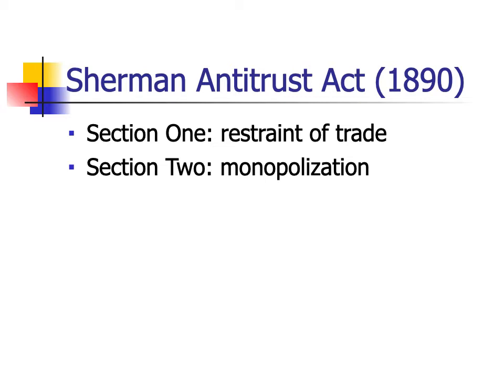The Sherman Antitrust Act has two important sections. Section 1 makes it illegal to restrain trade — this would include price fixing or conspiracies, and was used against dairies in the school milk case discussed at the beginning of this quarter. Section 2 prohibits monopolization, both successful and attempted monopolization, or conspiracy to become a monopoly.